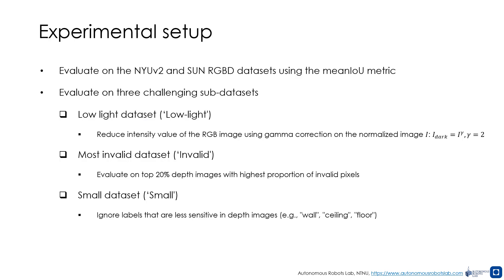We evaluate on the NYUV2 and SUN RGBD datasets using the mean IOU metric. Additionally, we test on three sub-datasets: the low-light dataset, which reduces RGB intensity using gamma correction; the invalid dataset, which contains the top 20% of depth images with the highest proportion of invalid pixels; and the small dataset, where we ignore depth-insensitive labels like wall, ceiling, and floor.